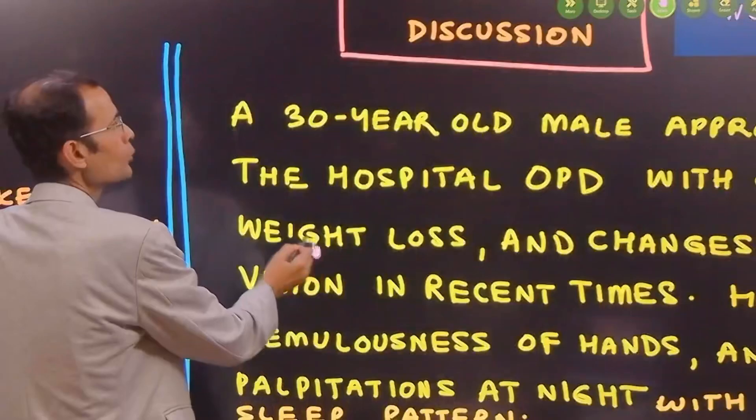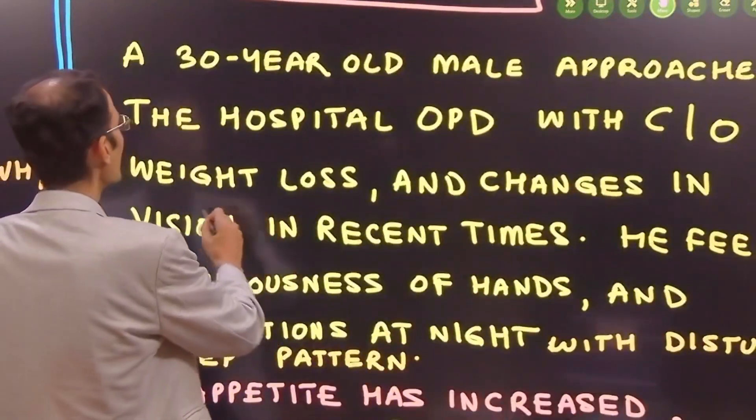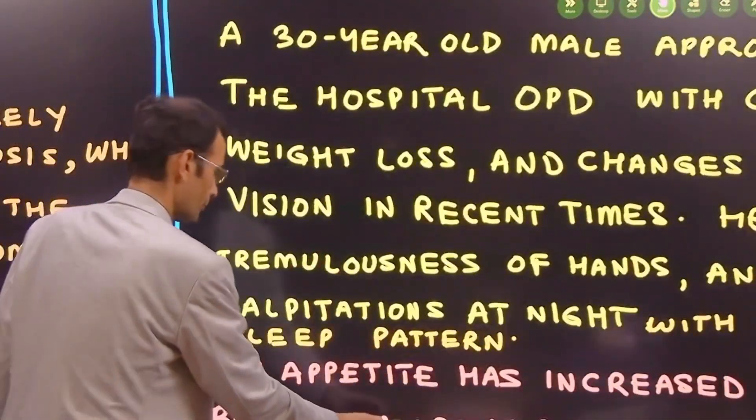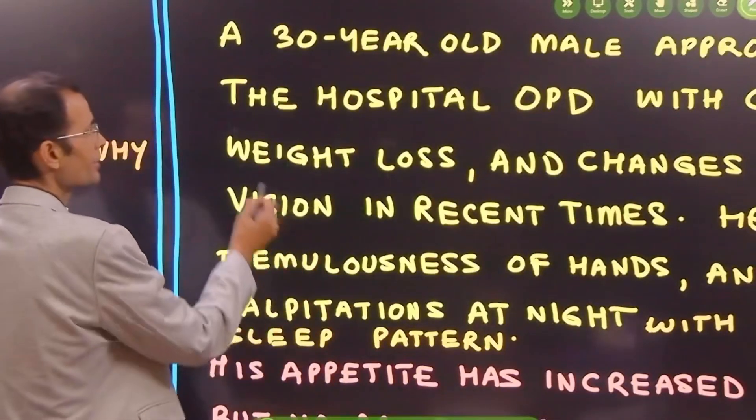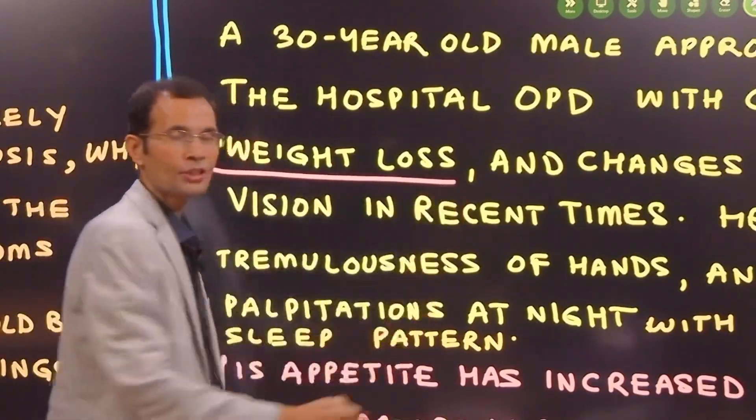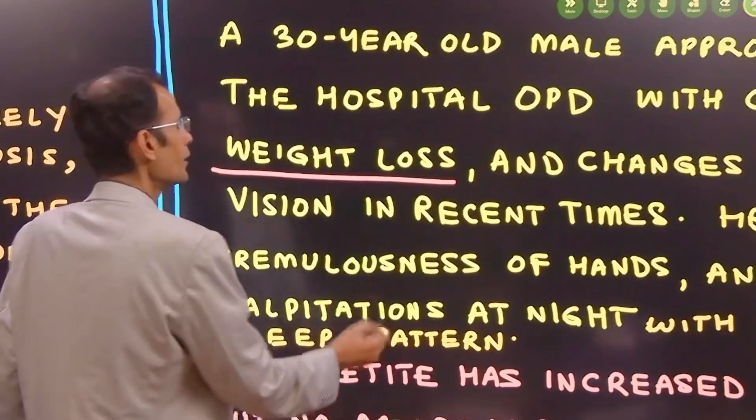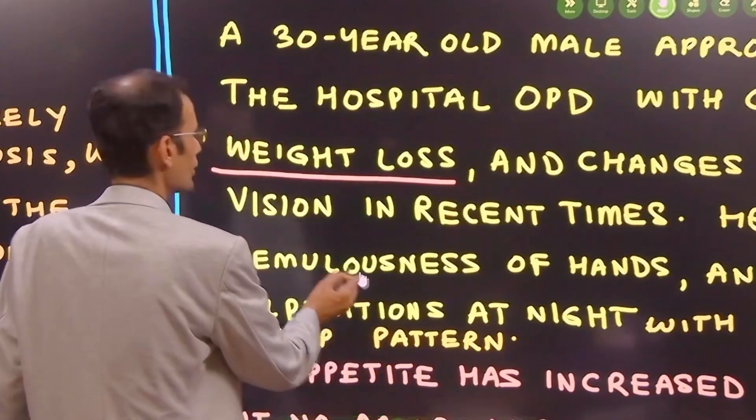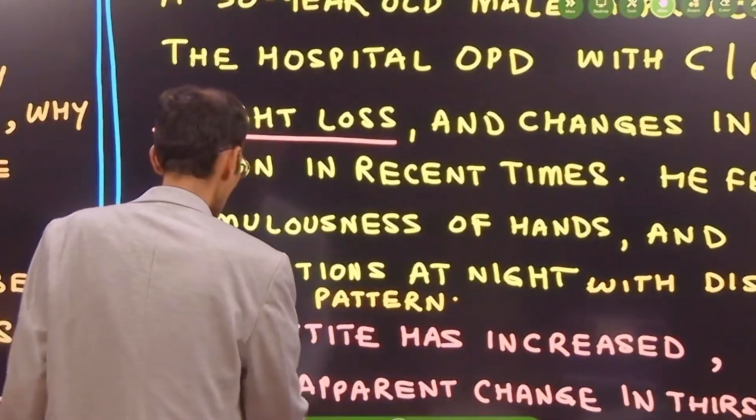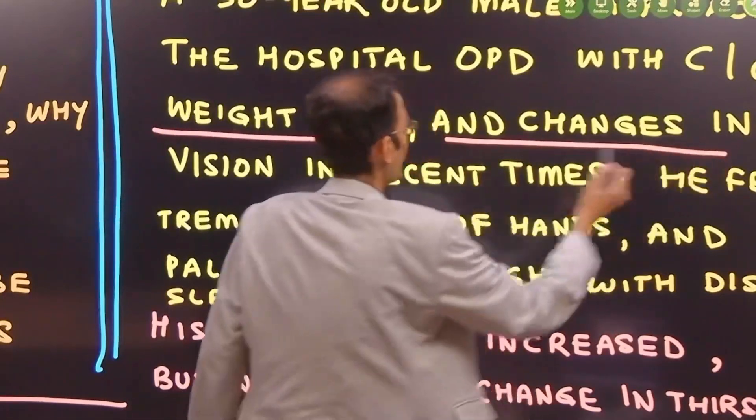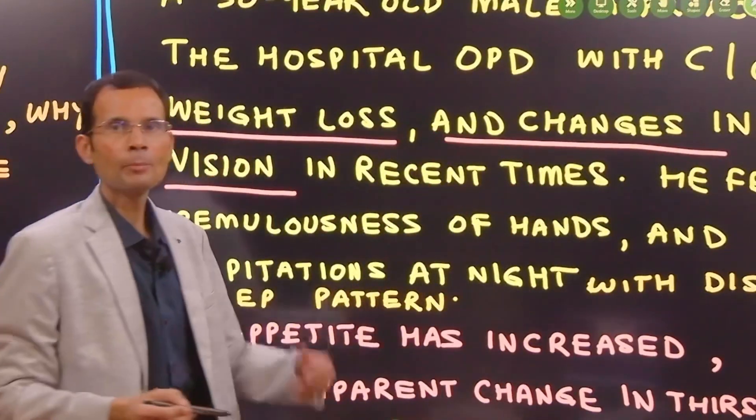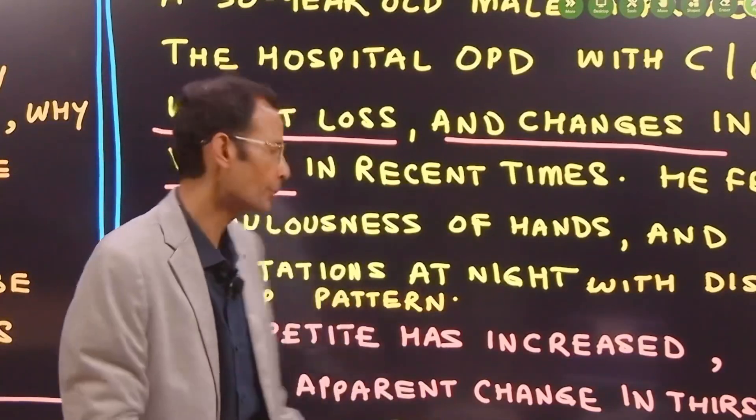A 30 year old male approached the hospital OPD with complaints of weight loss. That's the presenting complaint or chief complaint and changes in vision, changes in the vision. These are the chief complaints or presenting symptoms.